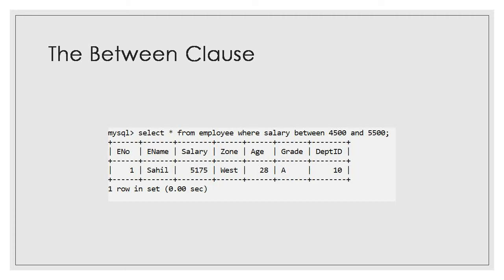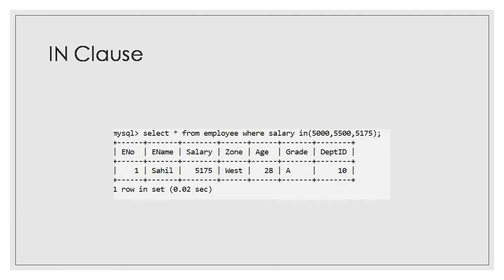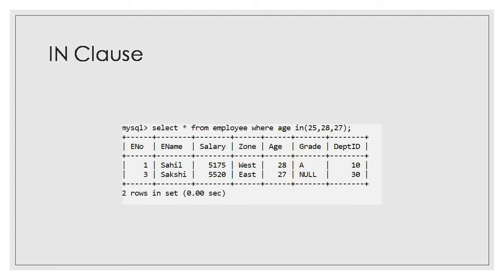There is also the IN clause. If you know specific values — for example, if I want records of employees whose age is only 30 or 40, not in-between values — I will use the IN clause. For example: SELECT * FROM employee WHERE age IN (30, 40). Only records of employees having age 30 and 40 will get displayed.